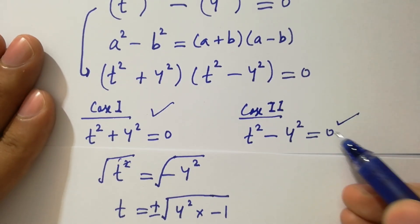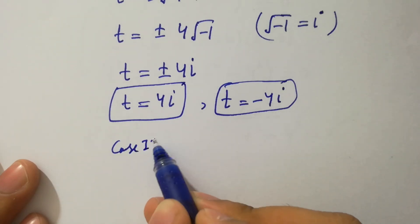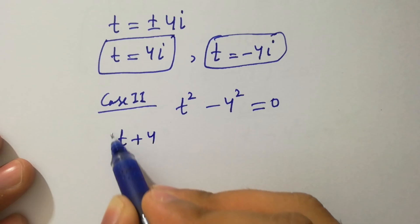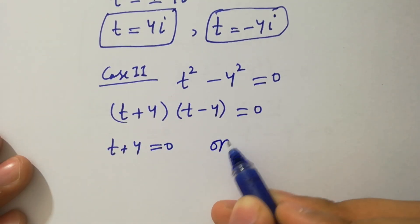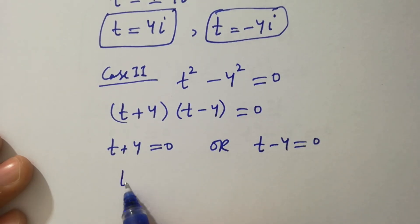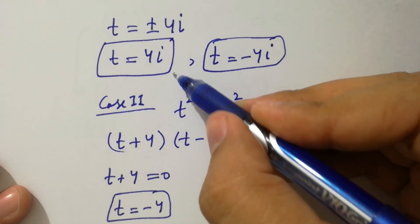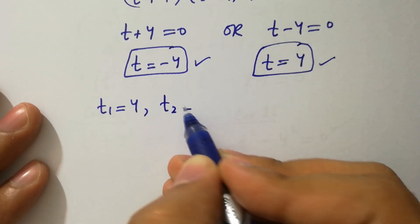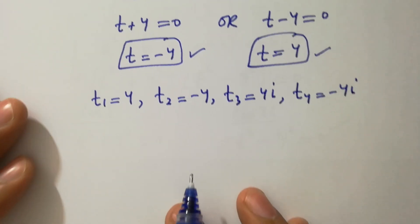From the second case, t square minus 4 square equals 0. Applying the formula a square minus b square, we get t plus 4 times t minus 4 equals 0. Either t plus 4 equals 0 or t minus 4 equals 0, giving t equals minus 4 and t equals plus 4. So we have four solutions: t1 equals 4, t2 equals minus 4, t3 equals 4i, and t4 equals minus 4i.